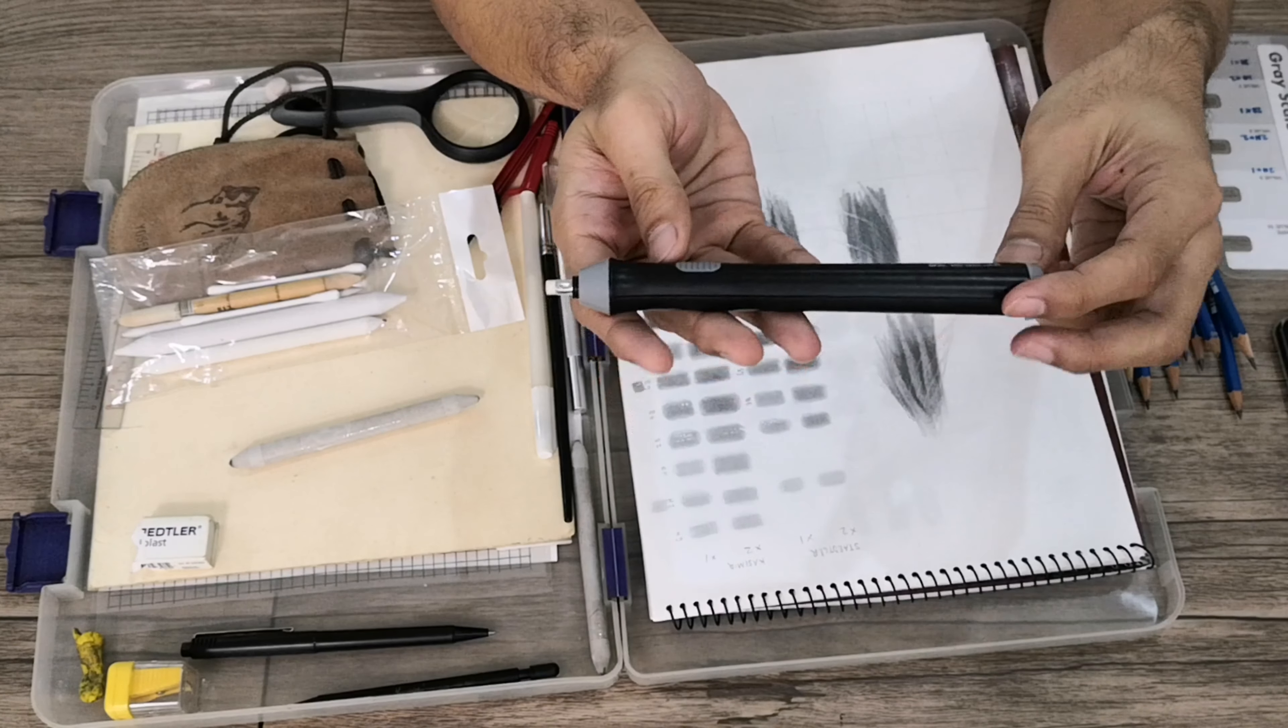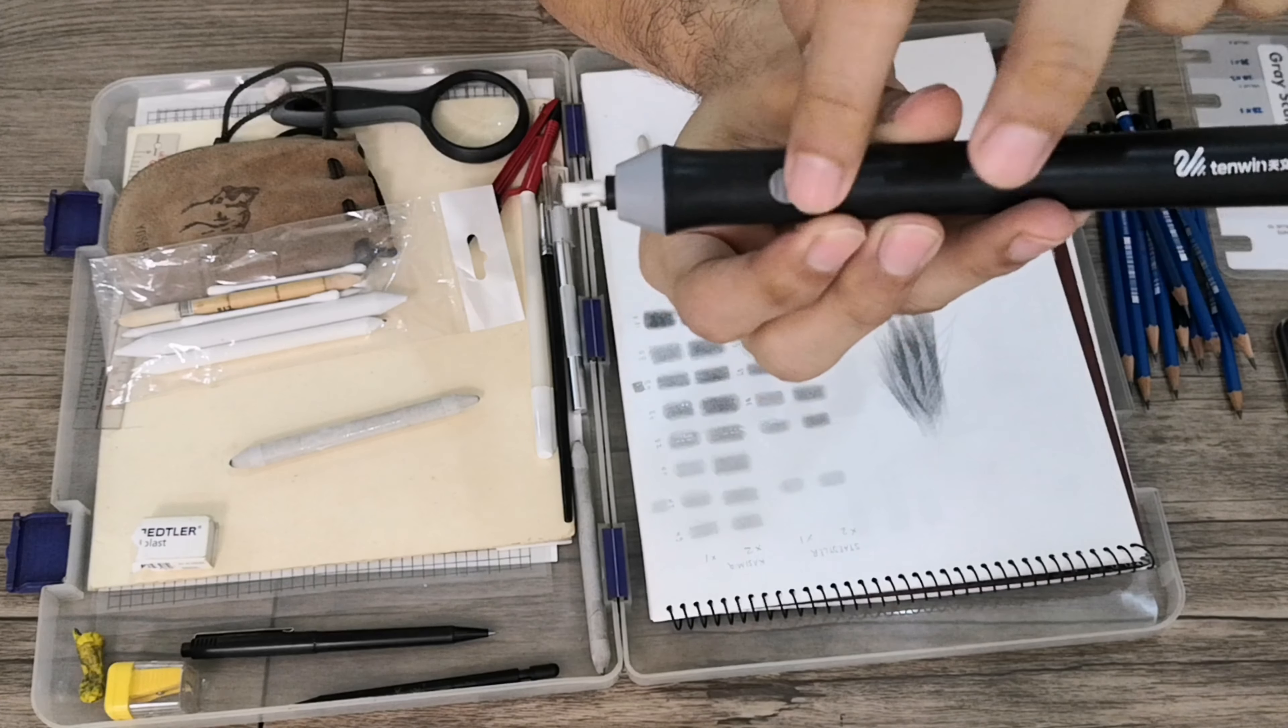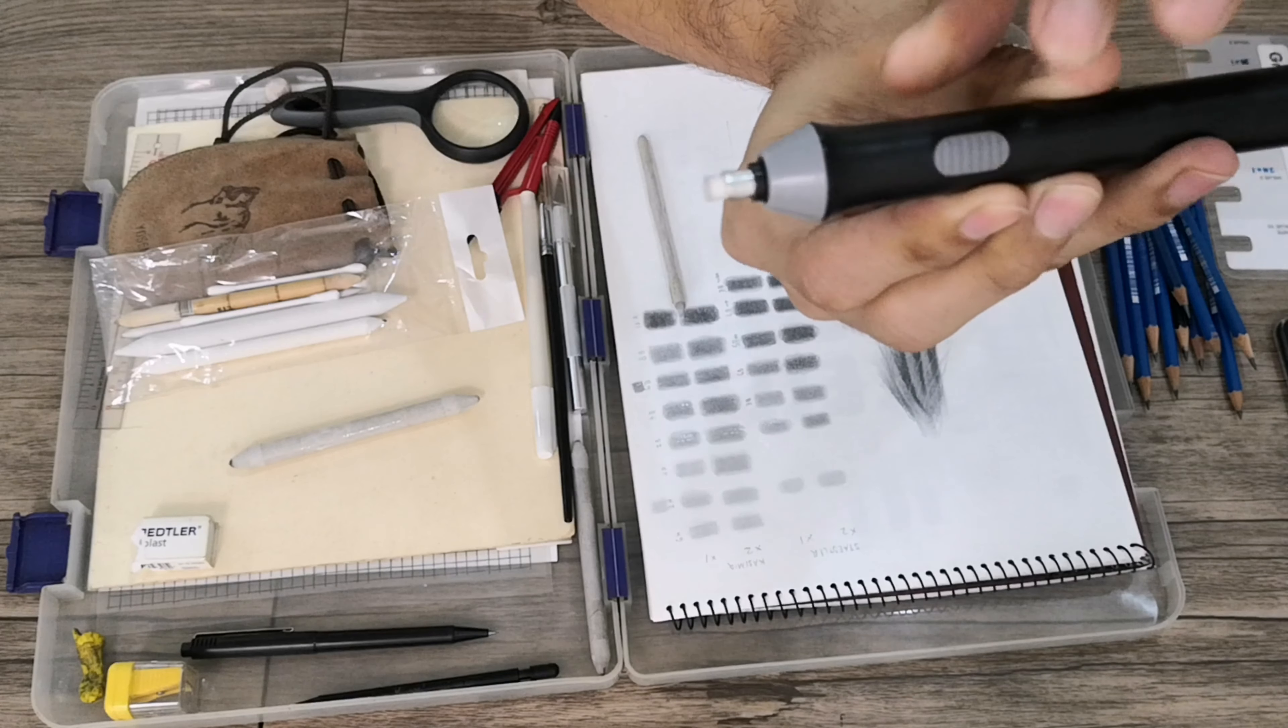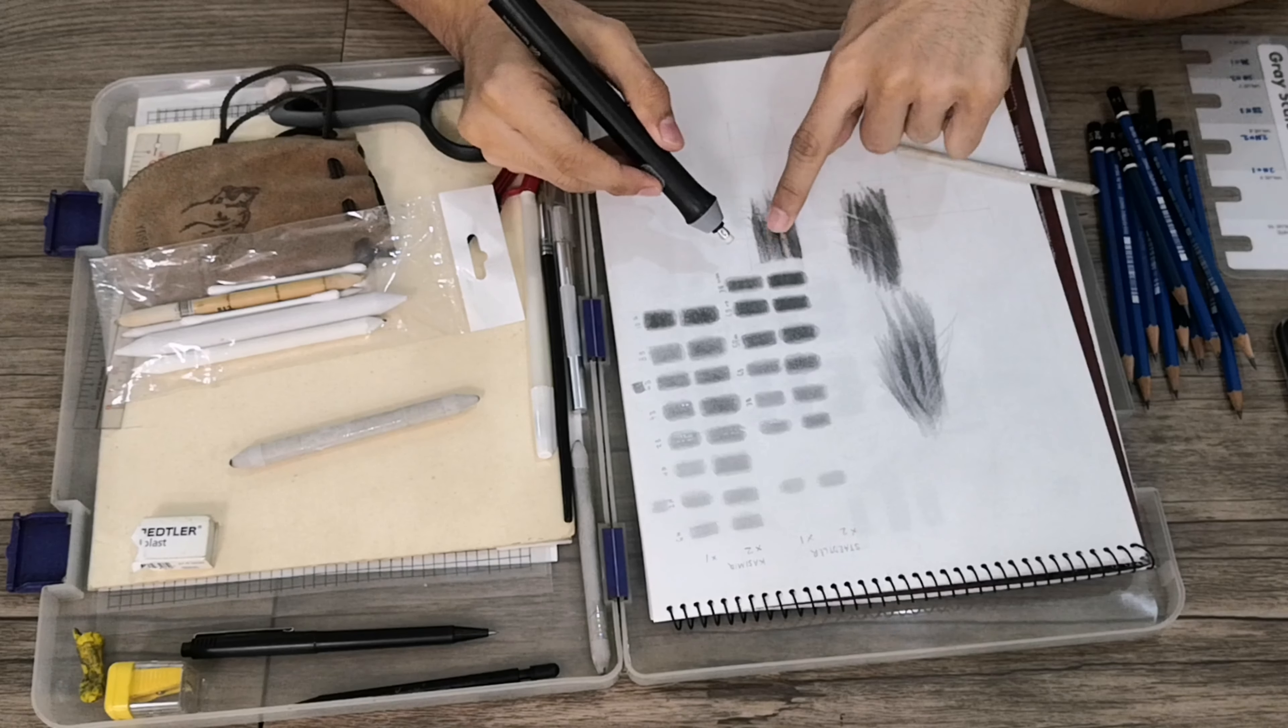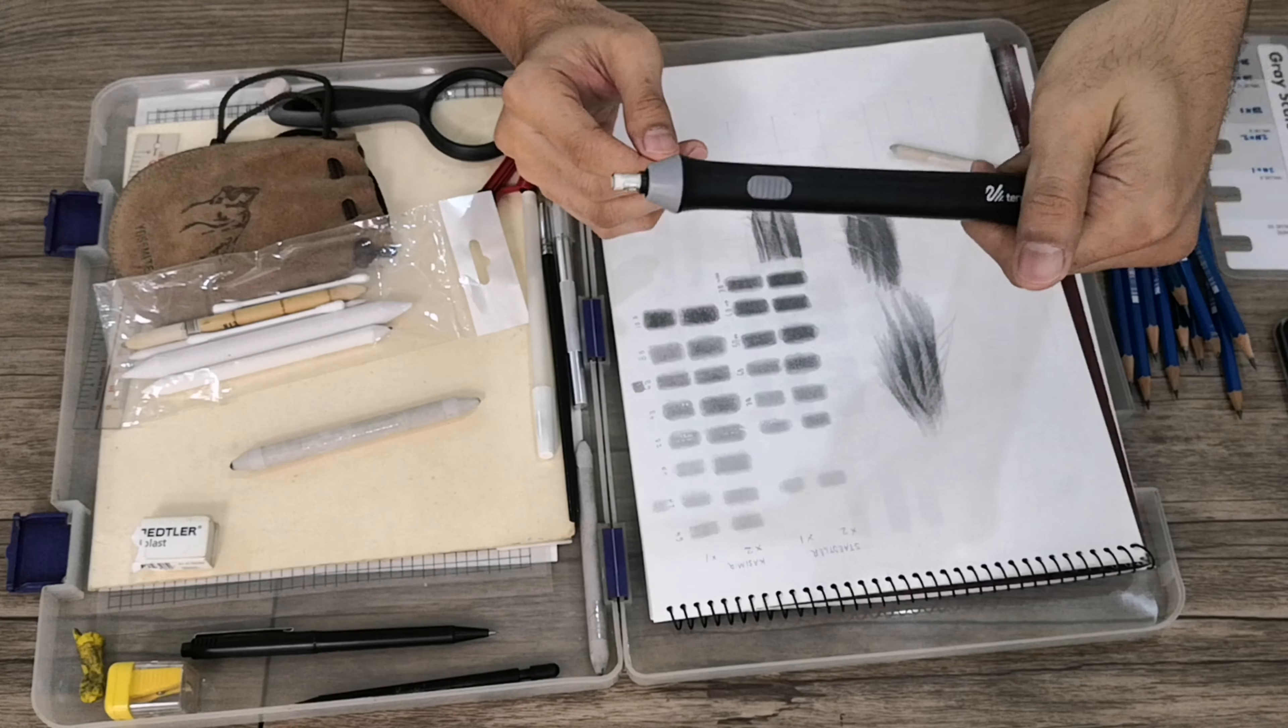Next I have this gadget I bought at Lazada. This is what we call an automatic eraser. What's nice about this is that it has a button right here wherein this eraser automatically rotates. We use this to erase or to correct or to give a white feature on our drawing. I will give an example of this one. So that's it, very easy to use.